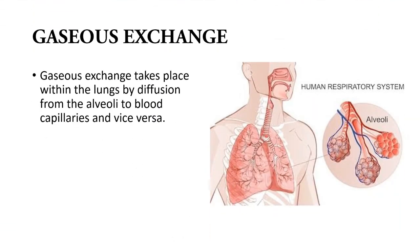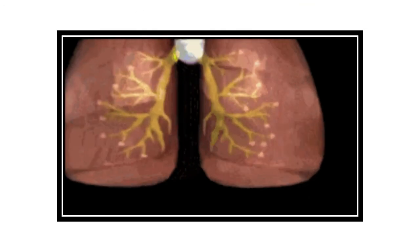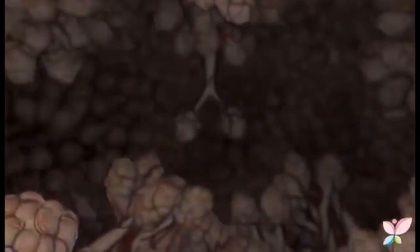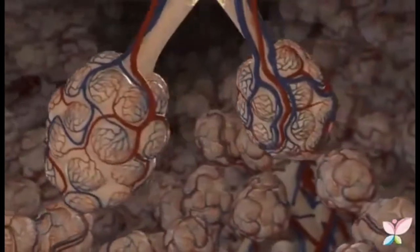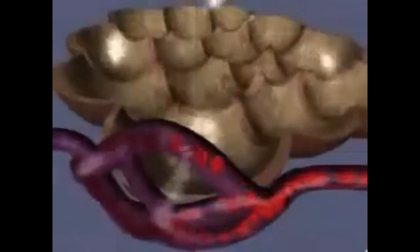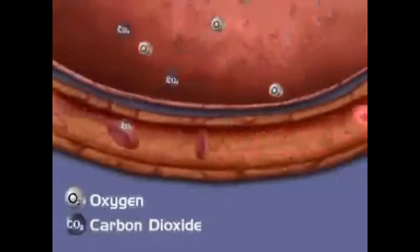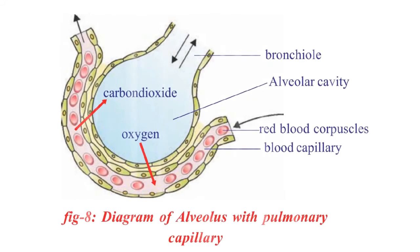Gaseous exchange takes place within the lungs by the diffusion process. The carbon dioxide present in the blood is exchanged with oxygen in the alveoli. Lungs are filled with tiny air sac-like structures known as alveoli. They are numerous in number and surrounded by capillaries. The capillaries collect blood from the heart which is dark red in color and carries carbon dioxide. This blood reaches the alveoli, which contain oxygen-rich air, and the carbon dioxide in the blood is exchanged with oxygen in the alveoli.